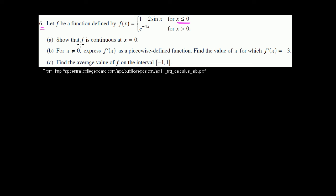Show that f is continuous at x equals 0. For something to be continuous at x equals 0, let's think about what has to happen. So if I have a function, that is my x-axis and this is my y-axis, and we care about what happens at x equals 0.